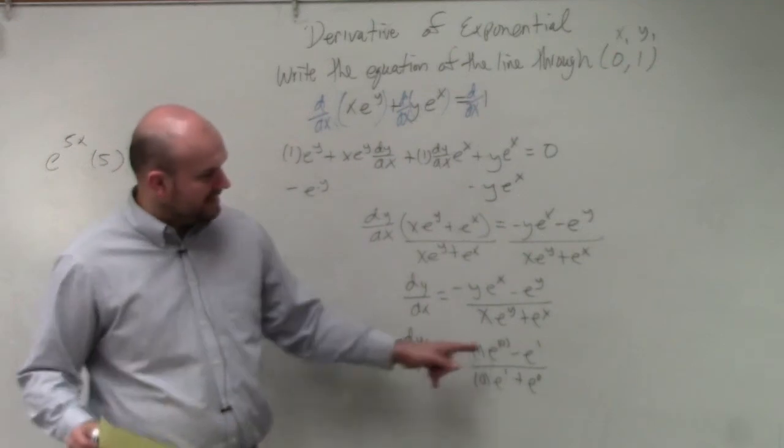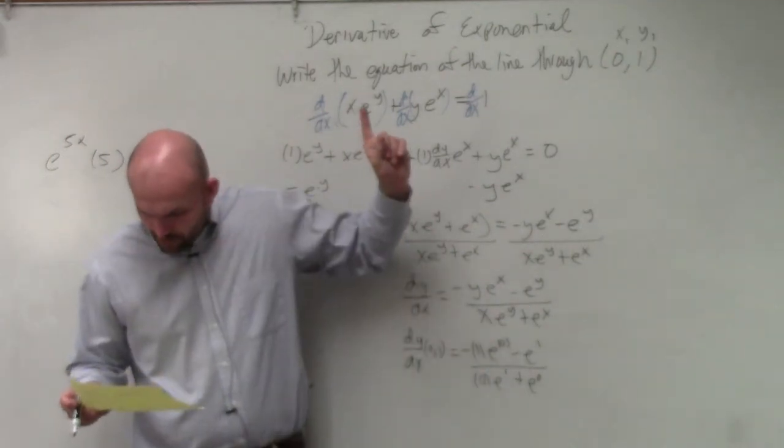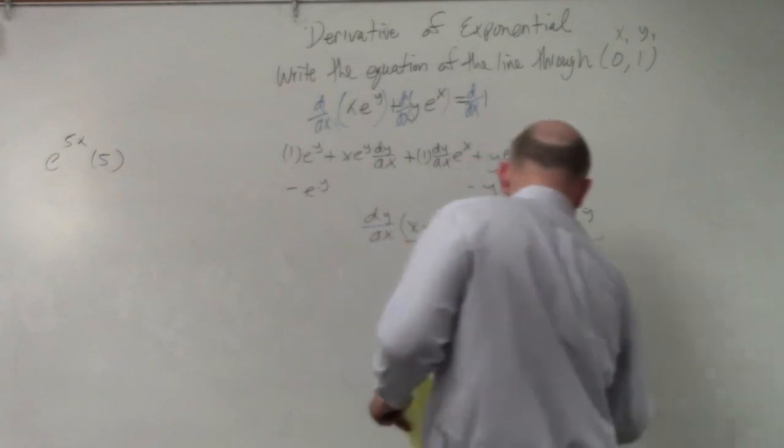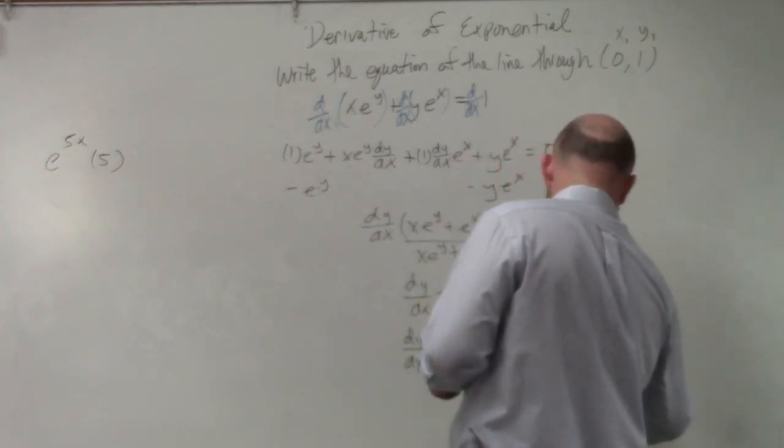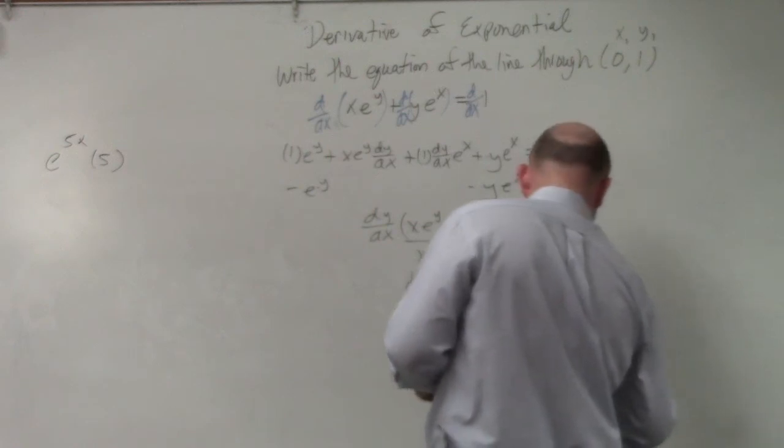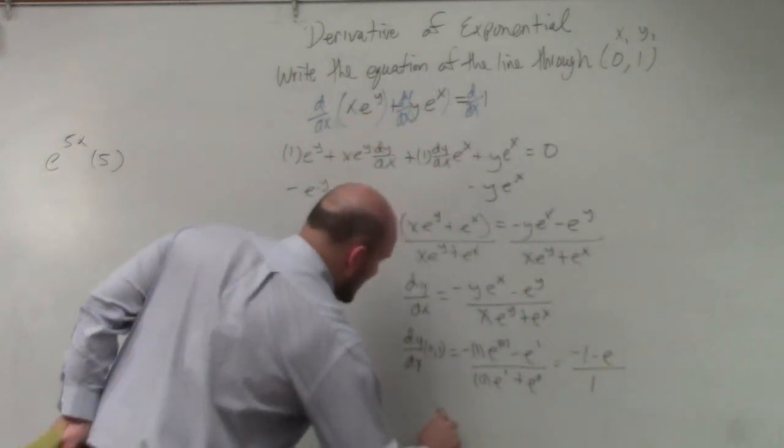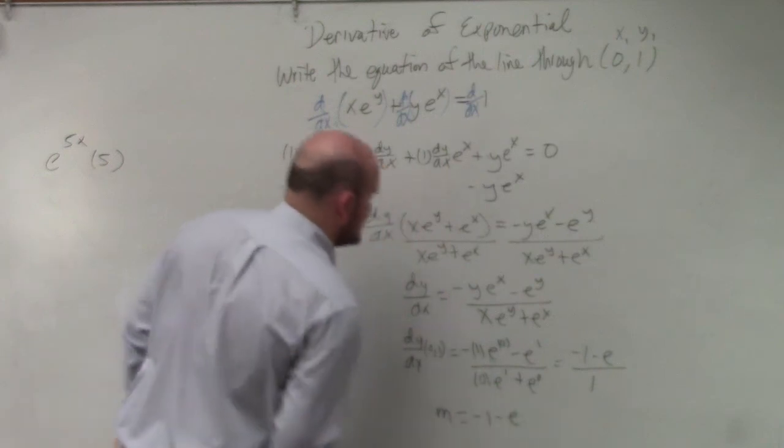So remember, ladies and gentlemen, e to the 0 is going to equal 1. So what we end up having is negative 1 minus e all over 1. So I could say my m is equal to negative 1 minus e.